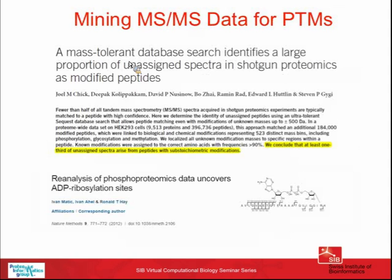A motivating publication from Steve Geiger's lab analyzed more than a million spectra from a cell line and concluded that at least one third of unassigned spectra arise from peptides with substoichiometric modifications. There is a large amount of modification present in MS-MS spectra that typically goes undetected.